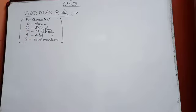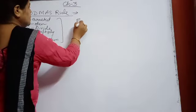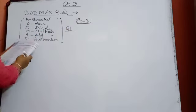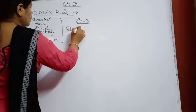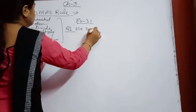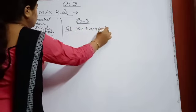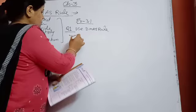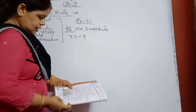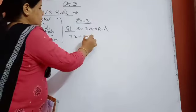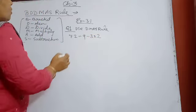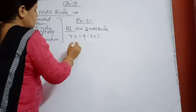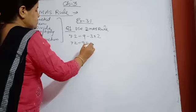Question number 1, exercise 3.1 — use DMAS rule. The question is: 72 divided by 9, minus 3 into 2. According to DMAS rule, what you will do first is divide. So 72 divided by 9 — 9 goes into 72 eight times, so it comes 8.